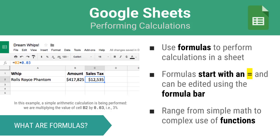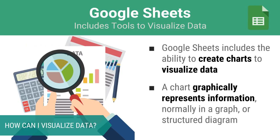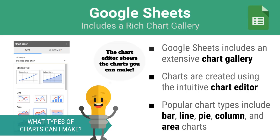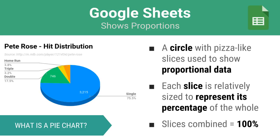Google Sheets includes the ability to create charts that allow you to visualize otherwise cold, lifeless data. Sheets has an extensive chart gallery which can be accessed from the chart editor. Although there are many chart types to choose from, we want to focus on the most popular ones — namely pie, line, and bar charts. Pie charts are for showing proportion. A pie chart is just like a pizza, built with relatively sized slices which all sum up to 100%. When you want to show percentages of the whole, the pie chart is the way to go.